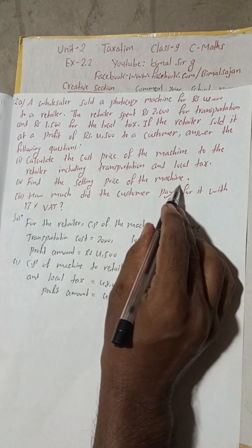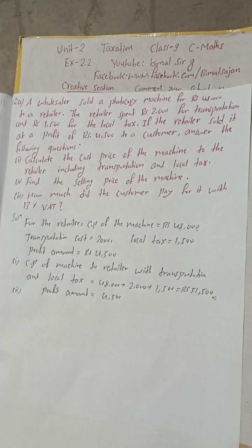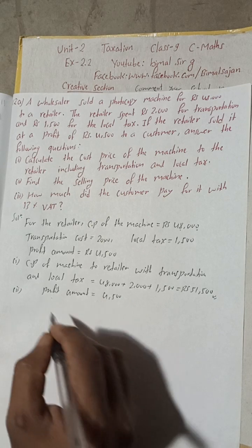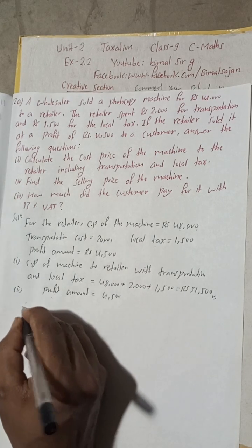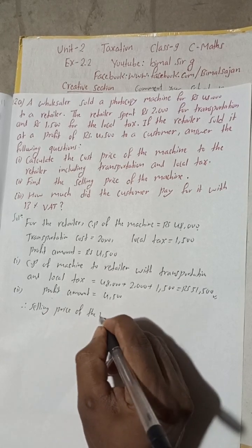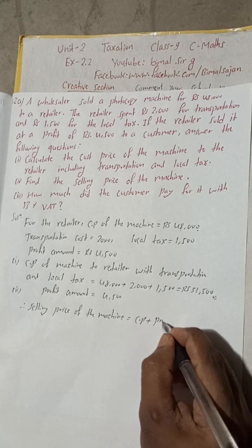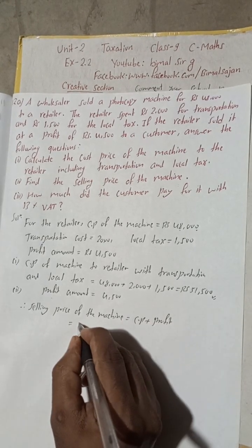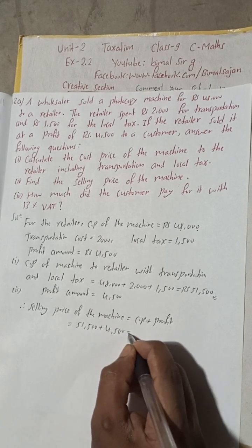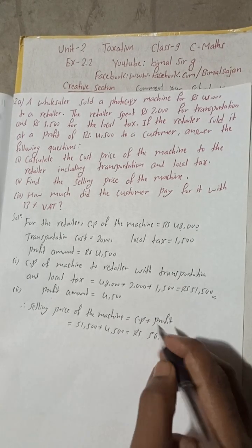Now number 2: find the selling price of the machine. For the selling price, we take the cost price and add the profit amount. Therefore, selling price of the machine = CP + profit = Rs 51,500 + Rs 4,500 = Rs 56,000. So Rs 56,000 is the solution for number 2.